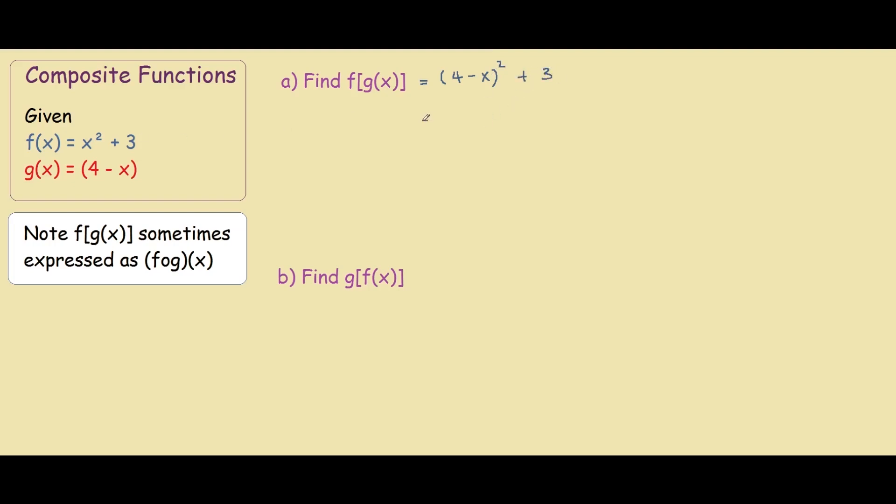Expanding these brackets out, you would get x squared minus 8x plus 16 plus 3. And further simplifying, you would get x squared minus 8x plus 19.